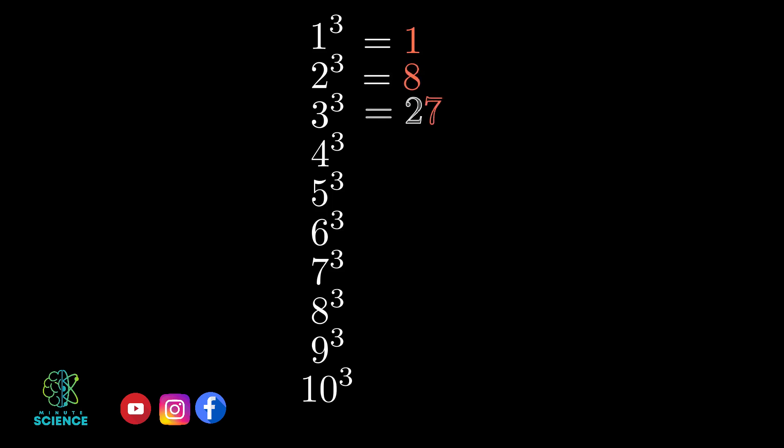3 cube is equal to 27, 4 cube is 64, 5 cube is 125, 6 cube is 216.